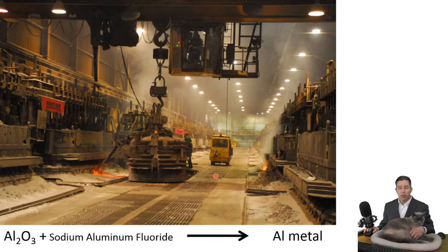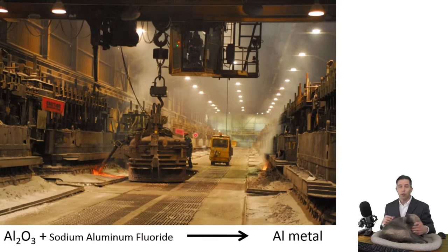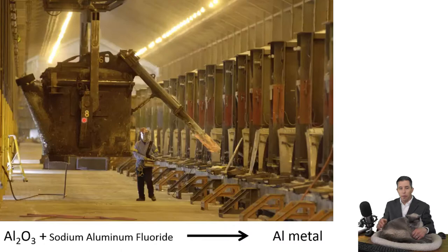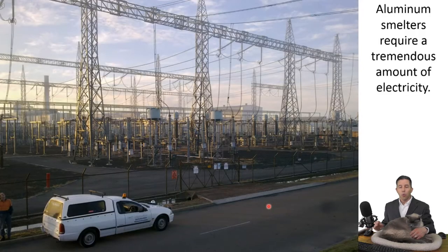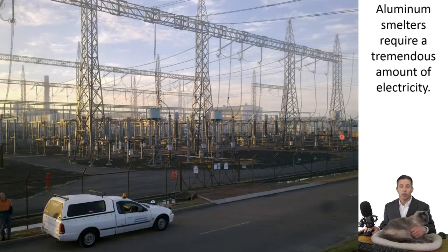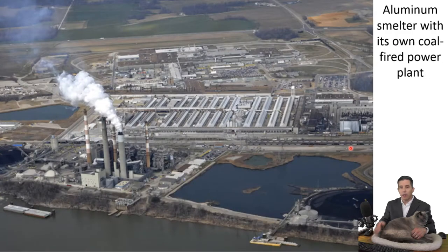This takes a lot of electricity. Each one of these vats has a set of electrodes each carrying thousands of amps — that's hundreds of thousands of watts per vat. It requires so much electricity to do this that often at the entrance of an aluminum smelter you'll see a huge network of incoming power lines. Sometimes they need so much electricity that they actually have their own power plants.